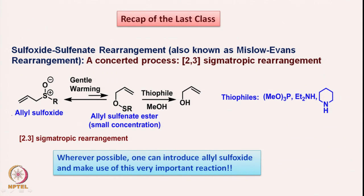Hello everyone. I hope you had a chance to go through the last class where we discussed sulfoxide sulfenate rearrangement, also known as Mislow-Evans rearrangement. It is a concerted process which involves 2,3-sigmatropic rearrangement. We are talking about an allyl sulfoxide — having a double bond and a sulfoxide — which upon gentle warming gives allyl sulfenate ester. These two species are in equilibrium, with the equilibrium mostly on the allylic sulfoxide side because the oxygen-sulfur bond in allyl sulfenate ester is relatively weak.